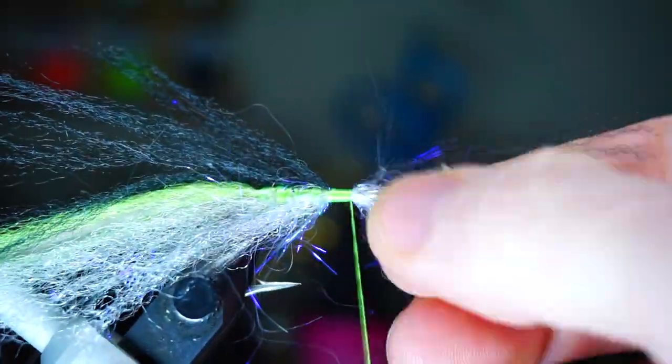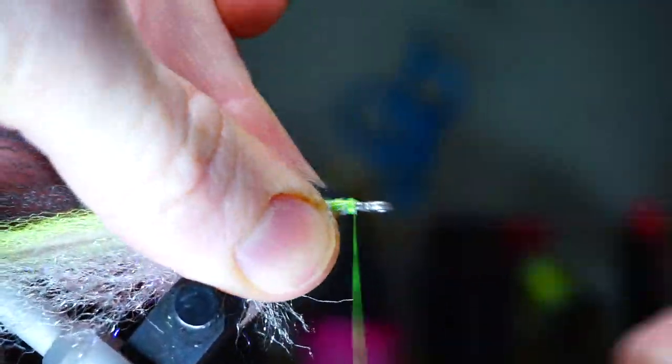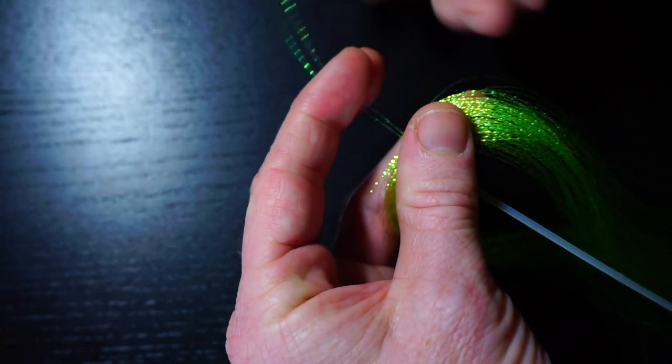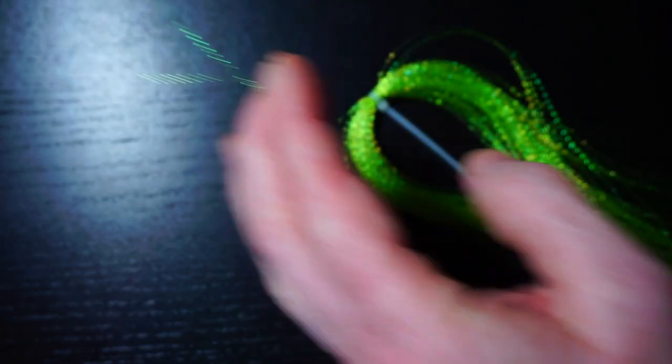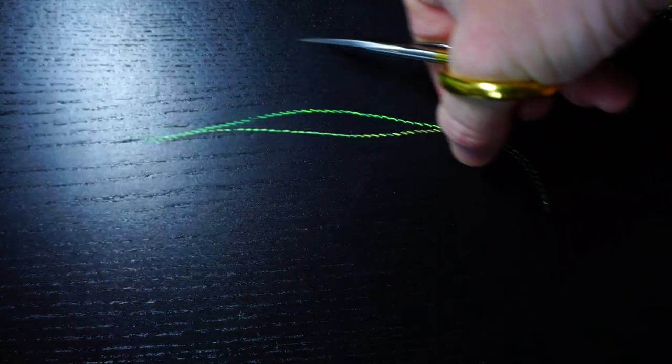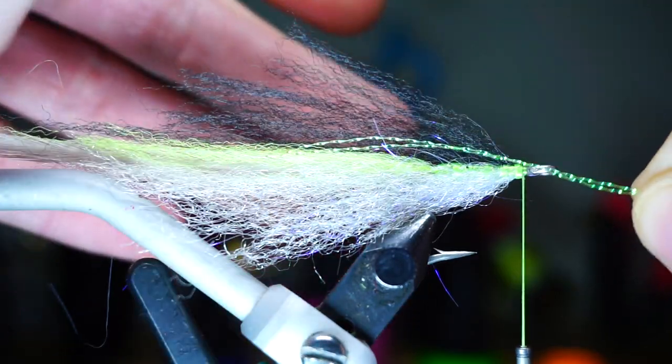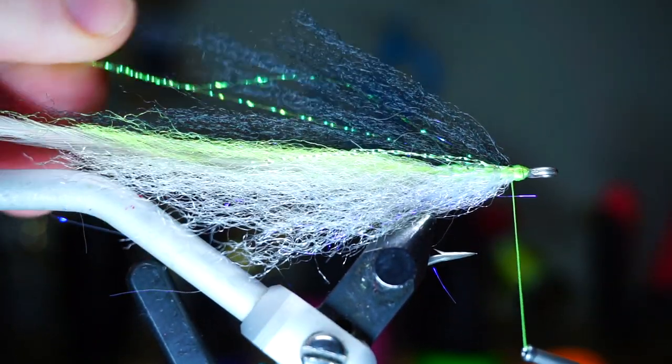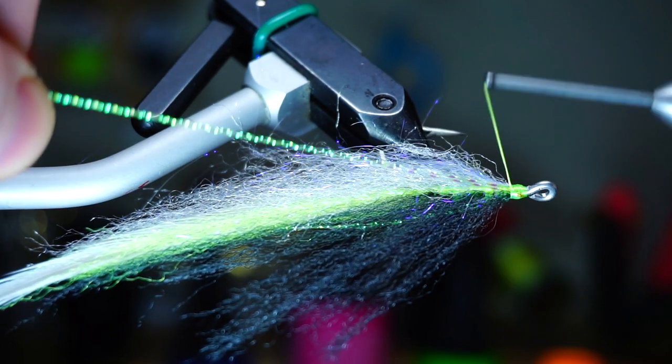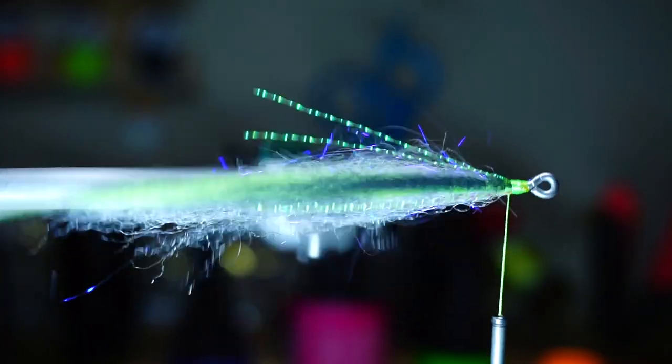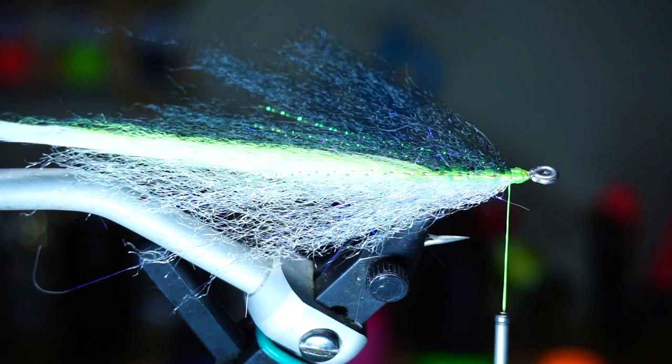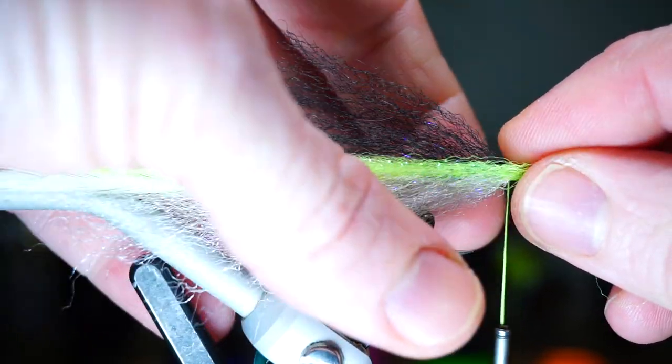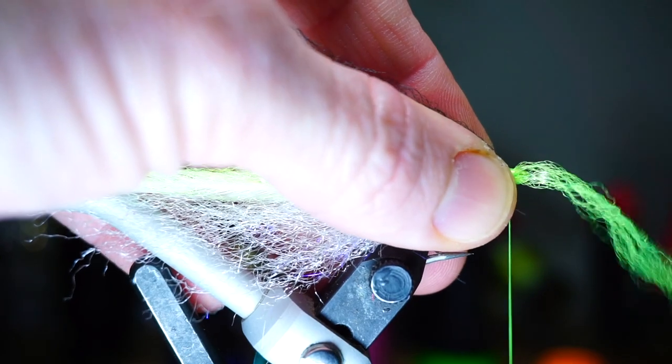Now for some crystal flash, I'm using chartreuse here. Clip off two strands and align the tips and tie it in so it extends back about halfway to the rear of the fly. Then pull it around and tie it in on the other side extending rearward as well, and then trim to length. When tying these in make sure they are even on the side and straight.